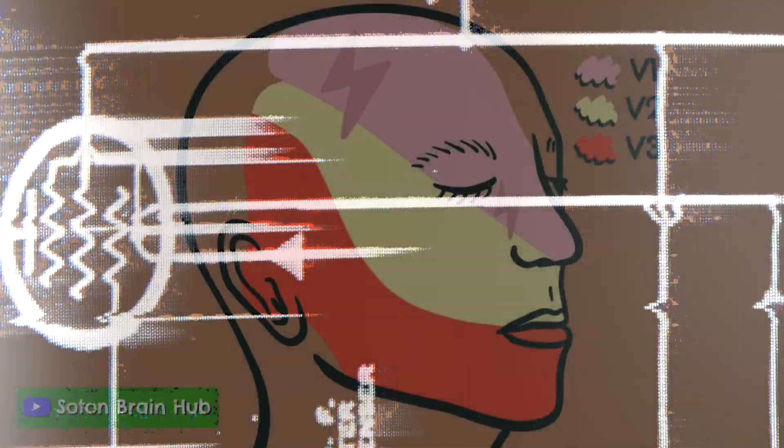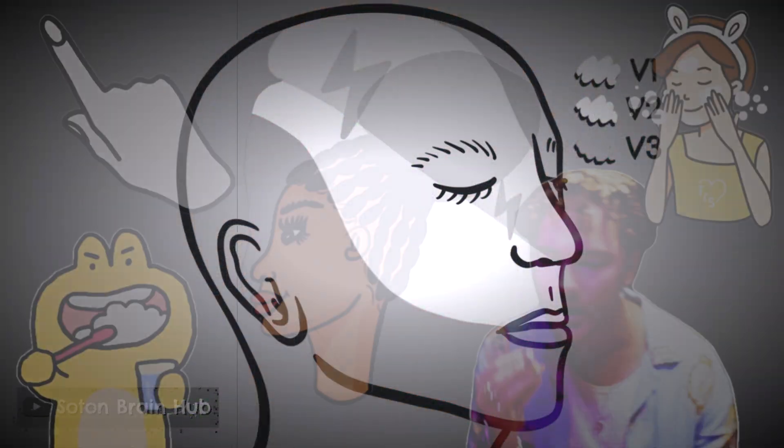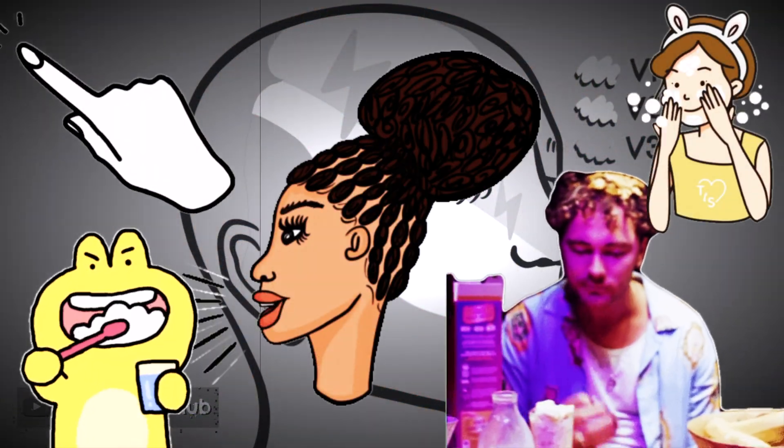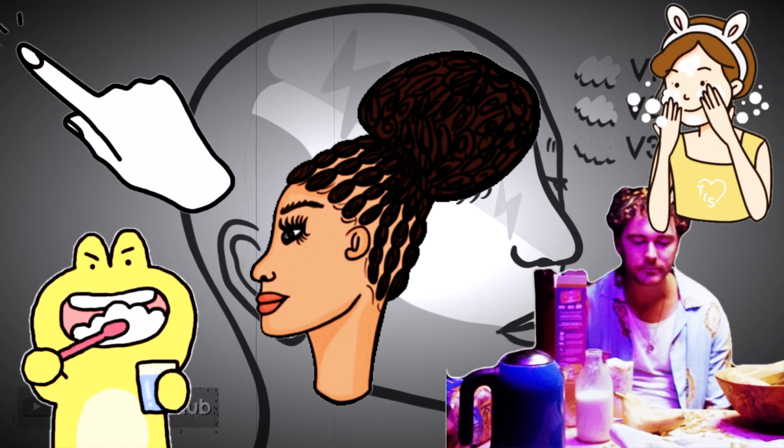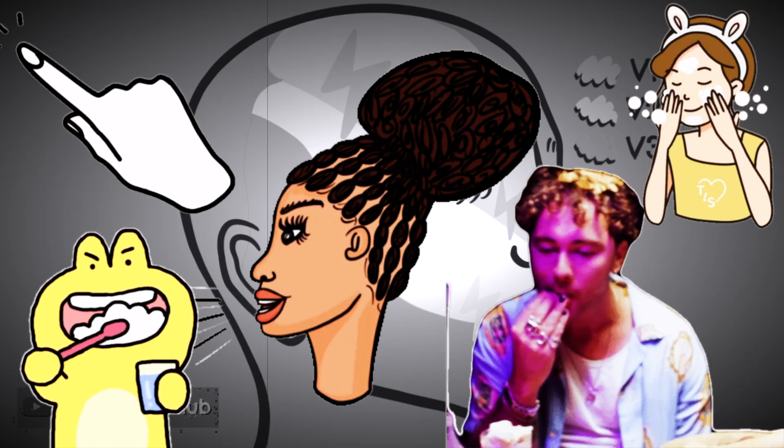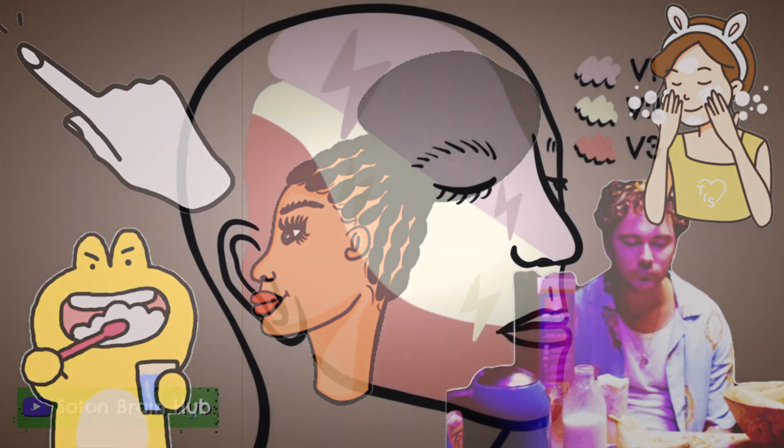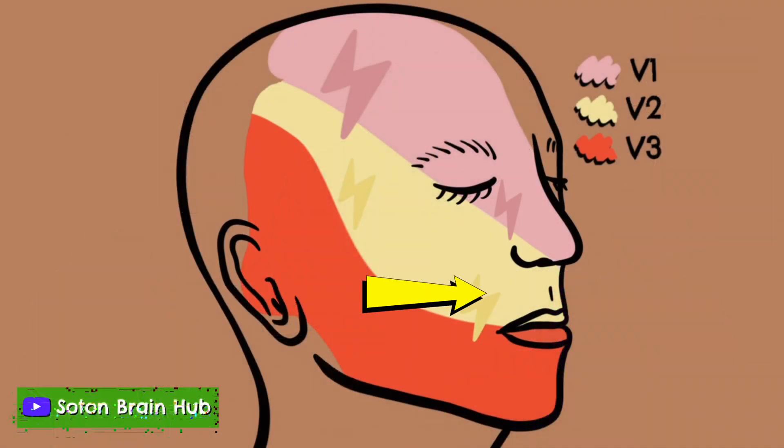The pain triggers are characterized as innocuous and mostly mechanical, with the most common including light touch, talking, chewing, tooth brushing and washing of the face. Trigger zones may be intra or extra oral and include nasolabial area, upper and lower lip, chin and cheek.